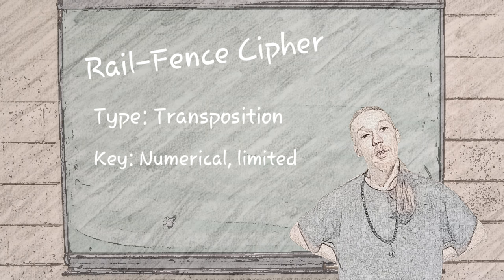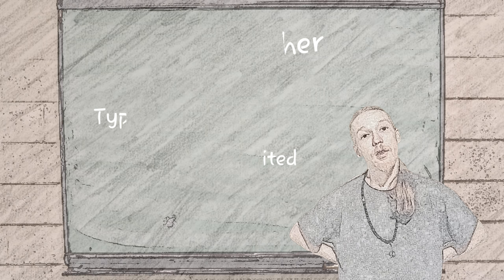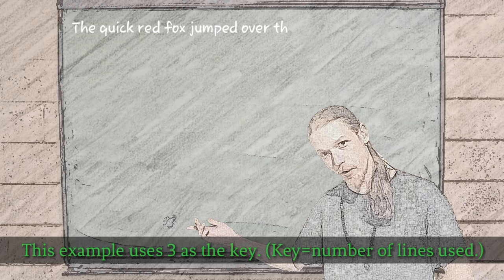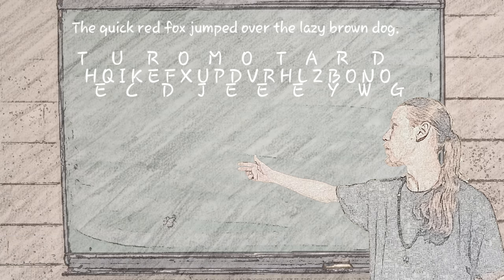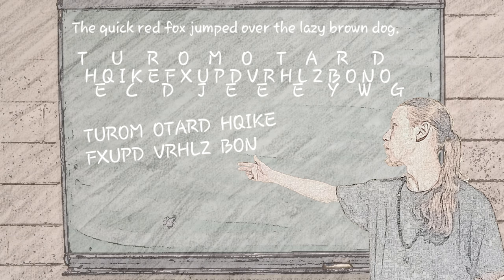The key is a number more than two but less than the length of the message. The message is written in a zigzag fashion using as many lines as the key requires. The letters are then rewritten in the order that they now appear.